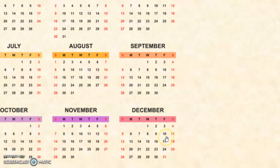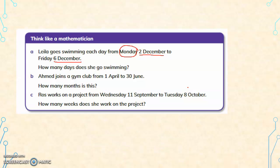From Monday to Friday, how many days? There are 5 days from Monday to Friday. So Laila goes swimming each day from Monday 2nd December to Friday 6th December — she goes swimming for 5 days.